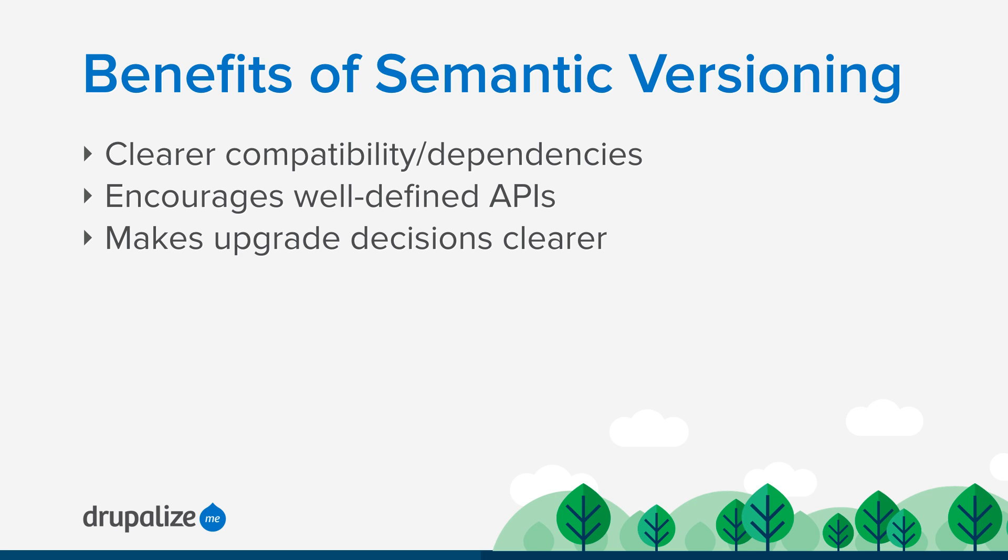Semantic versioning can also help with upgrade decisions. If you're an end user and you see a bug fix has come out, chances are that's a good thing to upgrade to — and you know it's not going to majorly change how you're used to using the software. If the minor version has changed, there's a new feature, but it's not going to break backwards compatibility. And if a major version comes along, you know things are likely going to be very different, which changes how you decide whether or not to upgrade. It's just a clearer message to people who are using the software — making things more explicit and beneficial for developers and users alike.